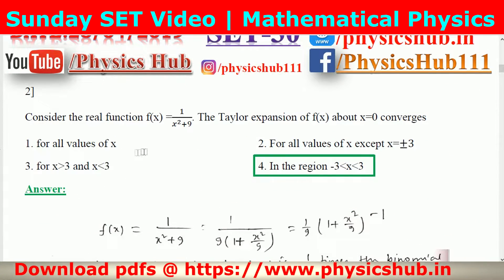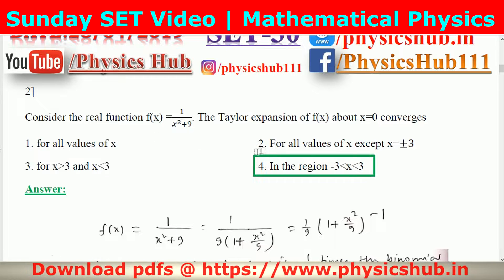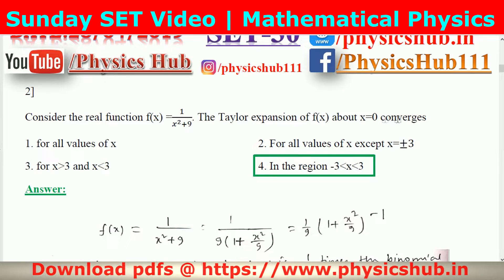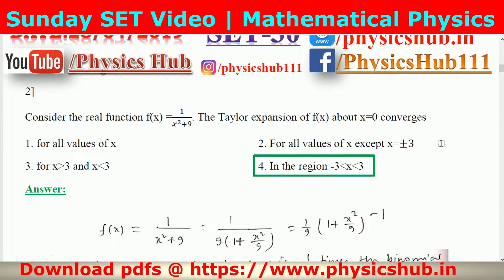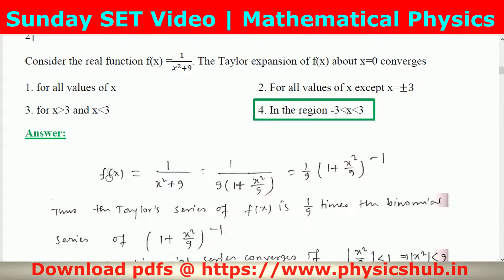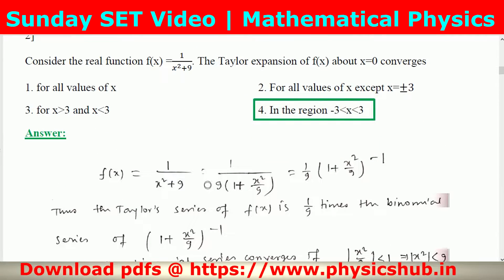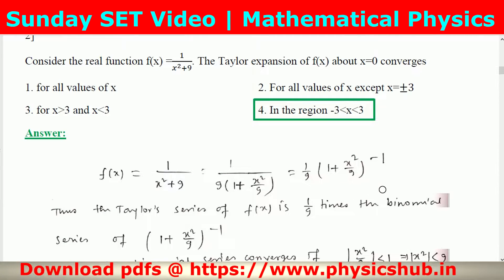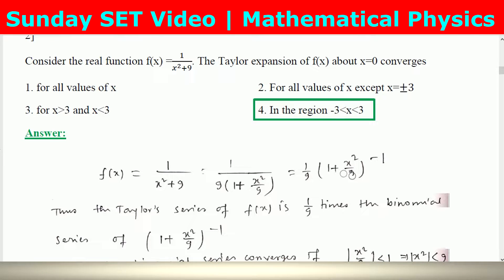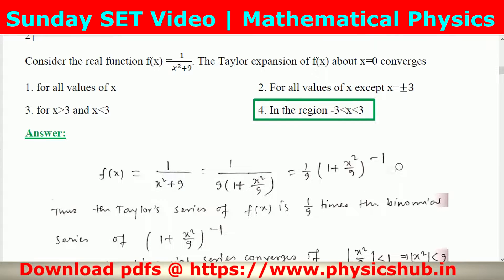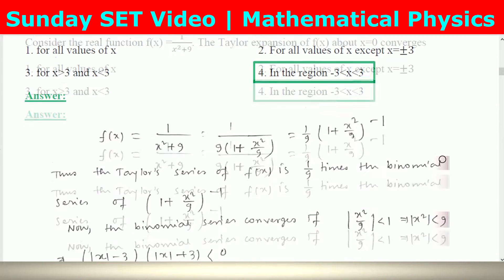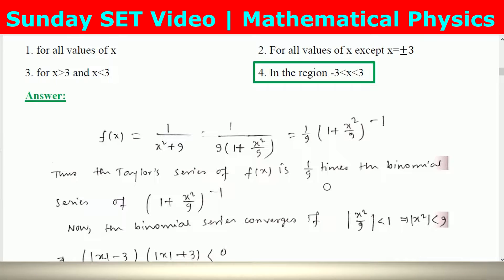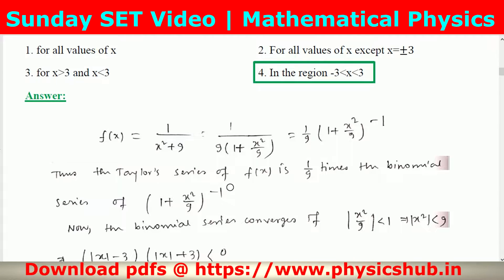Question number 2: consider the real function f(x) = 1/(x²+9). The Taylor expansion of f(x) about x=0 converges for which range? We can take 9 common, giving (1/9)·(1 + x²/9)⁻¹, which looks like (A+B)⁻¹. So the Taylor series of f(x) is (1/9) times the binomial expansion of (1 + x²/9).